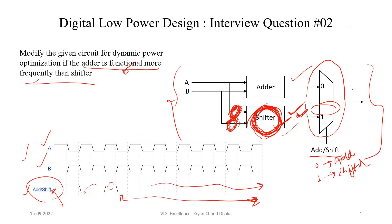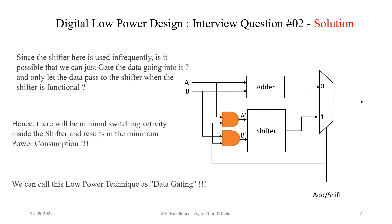If we modify the original circuit, we introduce two additional AND gates. The inputs to these AND gates are the two input signals A and B going to the shifter, and the other input to each AND gate is the selection line. When the selection line is zero, the output of these AND gates will always be zero — even though the real inputs A and B are toggling — and hence the switching at the shifter inputs is not happening, resulting in a reduction of switching power in the shifter.